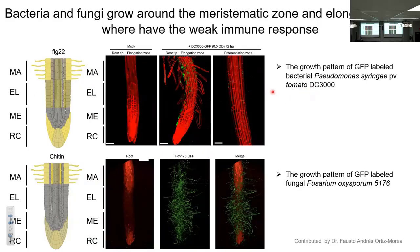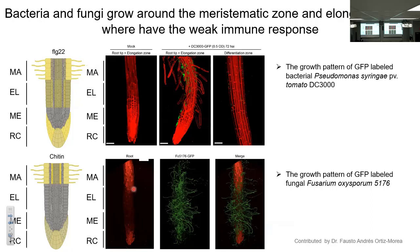We found that bacteria tagged with GFP could grow around the meristematic zone and the elongation zone, where the immune response is weak. Similarly, the fungus Fusarium also grows around the meristematic zone and elongation zone where the immune response is quite weak. This result is consistent with our single-cell RNA-seq data.